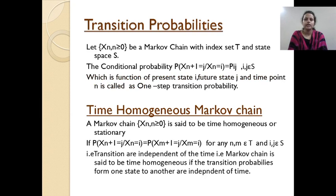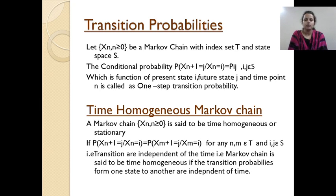Next, transition probability. P(ij) is called the transition probability, where P(ij) is a function of the present state i, the next state j, and time point n. It is called the one-step transition probability. Next, the time-homogeneous Markov Chain. If the transitions are independent of time, that is if the transition probabilities from one state to another are independent of time, it is called a time-homogeneous Markov Chain.